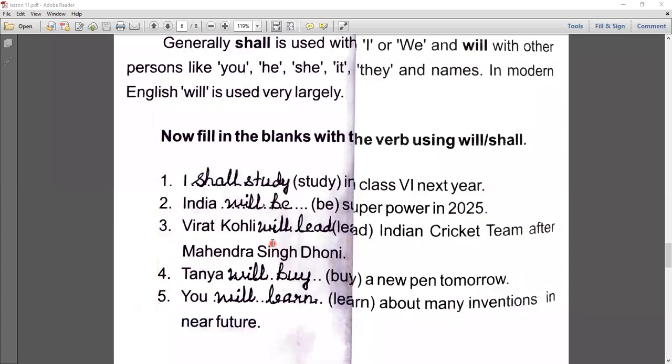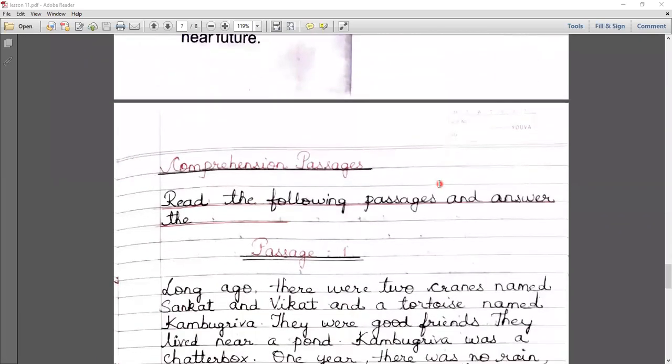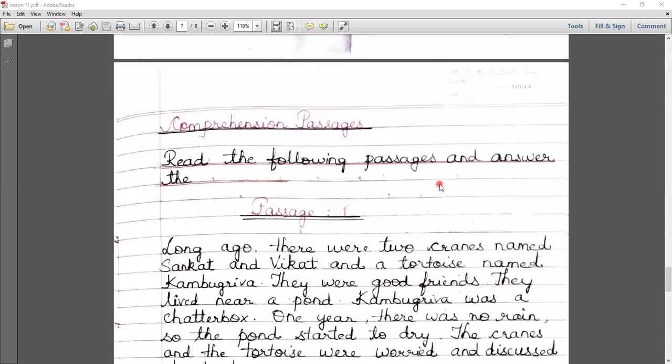Number four: Tanya blank buy a new pen tomorrow. Tomorrow - that identifies future tense, so we use the future verb: Tanya will buy a new pen tomorrow. Number five: You will learn about many inventions in near future. So here we talk about future tense, so we use you will learn about many inventions in near future.